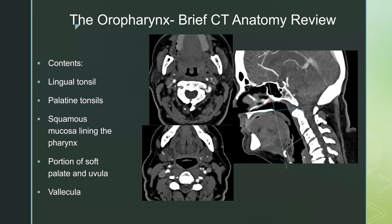For a brief review of the anatomy, the oropharynx is everything posterior to the tip of the hard palate, to the level of the hyoid bone, and dorsally to the level of the spine and prevertebral soft tissues. That encompasses the lingual tonsil, which is the tongue base, the palatine tonsils, the squamous mucosa lining all of the oropharynx, the portion of the soft palate and uvula posterior to the tip of the hard palate, as well as the vallecula — the space between the tongue base and the epiglottis.